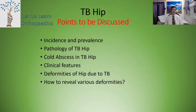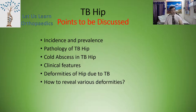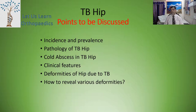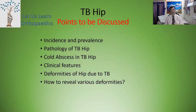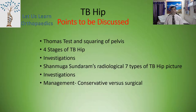Dear students, today we will be discussing about tuberculosis of the hip on the following points: 1. Incidence and prevalence; 2. Pathology of the TB hip; 3. Collapse in the TB hip; 4. Clinical features; 5. Deformities of the hip due to tuberculosis; 6. How to reveal various deformities; 7. Thomas test and squaring of the pelvis; and the four stages of tuberculosis of hip.